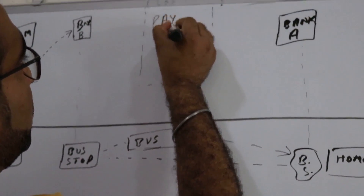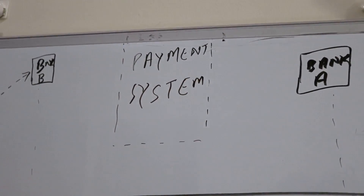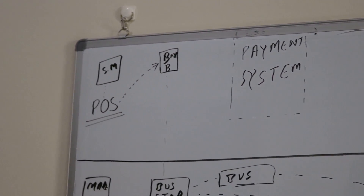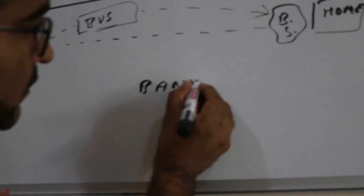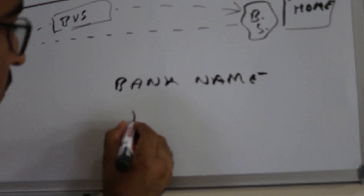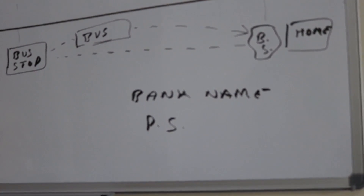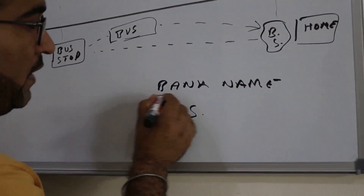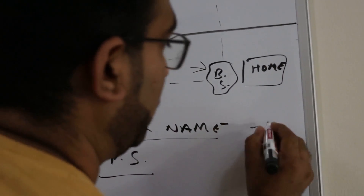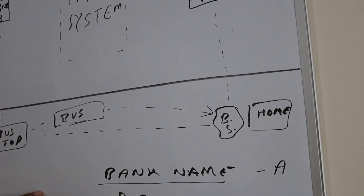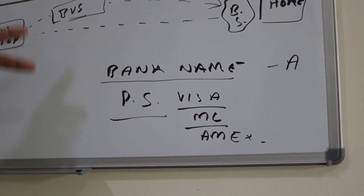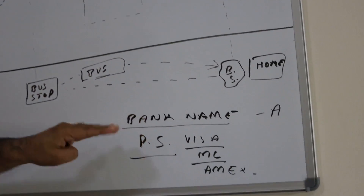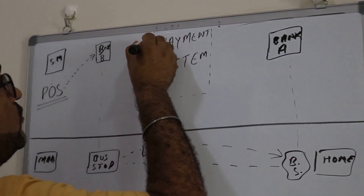That middleware is called a payment system or payment scheme. If you check your plastic card, there are two things mentioned on it: the bank name and the payment scheme name. Your card has a credit card number, expiry date, and other details, but it also shows the bank name — Bank A in this case — and the payment scheme, which could be Visa, Mastercard, Amex, JCB, or UnionPay.